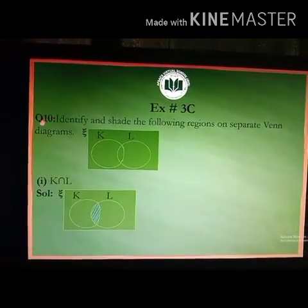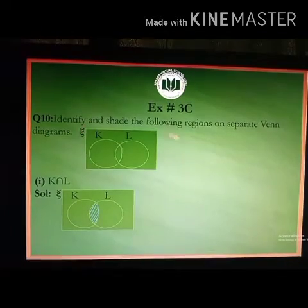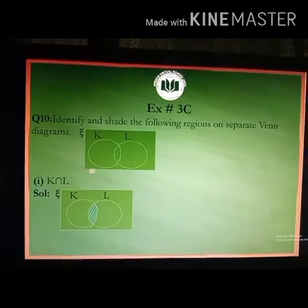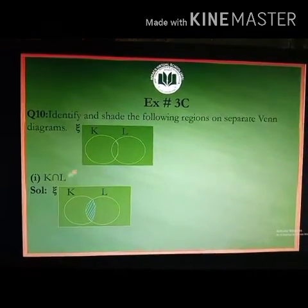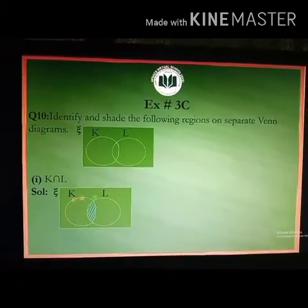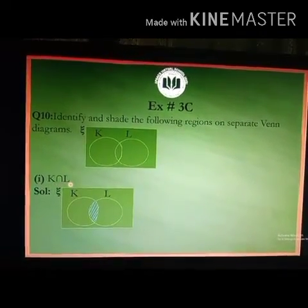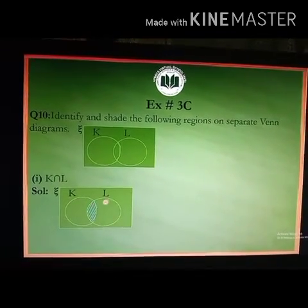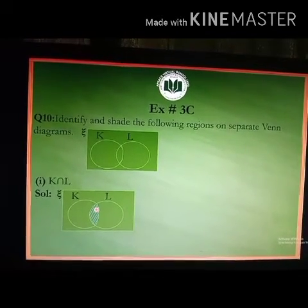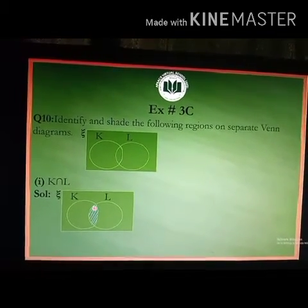Next, we have question number 10: identify and shade the following regions on separate Venn diagrams. The Venn diagram is represented with universal set X and sets K and L. Part 1 is K intersection L. In the Venn diagram, K intersection L represents only the common region of K and L, which is the overlapping region. So I have shaded only the overlapping region of the two circles.